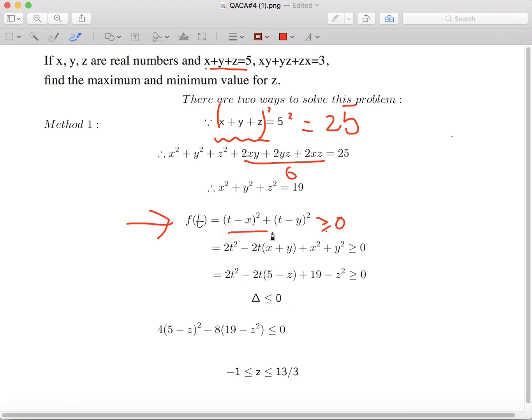If we FOIL this part, we can have that 2t squared minus 2t times x plus y plus x squared plus y squared is bigger or equal to 0. We know that x plus y is 5 minus z, and x squared plus y squared is 19 minus z squared.